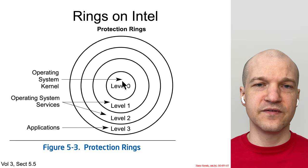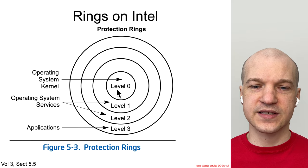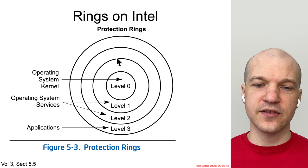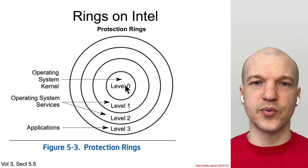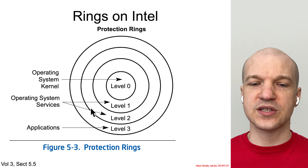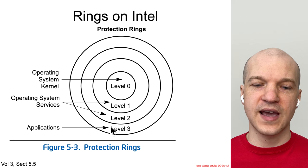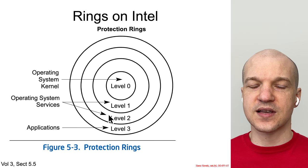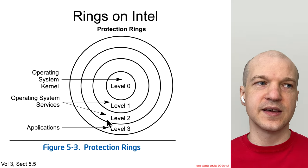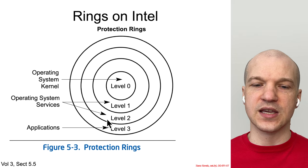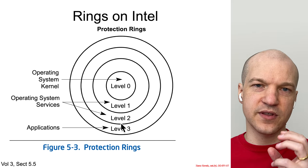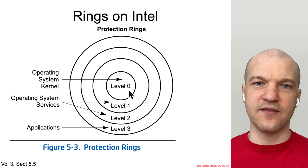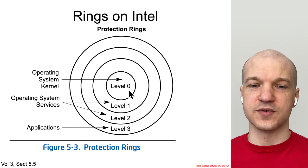Intel envisioned that ring 0 would be the operating system kernel, and then in order to deprivilege other code in the system — so that it didn't have the capability to do everything — you might have operating system services at rings 1 or 2, and then applications would run with the least privilege at ring 3. For example, some basic OS service like memory copy between processes might run at ring 1 or 2 so that if that code was compromised, it couldn't do everything everywhere the way it could if it were at level 0.